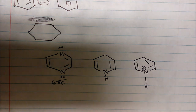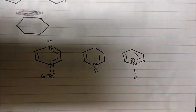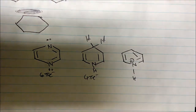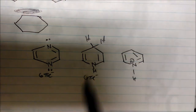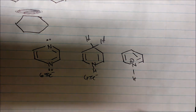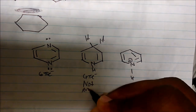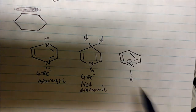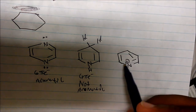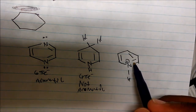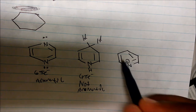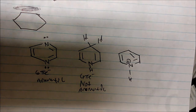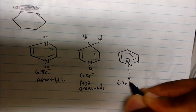The key point is you cannot count lone pairs towards hybridization and as pi electrons at the same time — it's either/or. Now the second example has 4 pi electrons and the nitrogen is sp3 hybridized, so it is not aromatic at all. The third example is aromatic — it has 2, 4, 6 pi electrons, all atoms are sp2, it's conjugated, so this is a 6 pi electron aromatic compound.